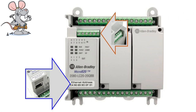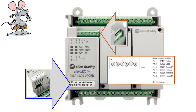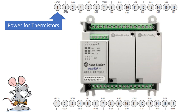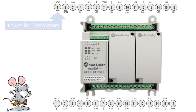It has an RS-232/485 port with six terminals — three terminals for RS-232 (pins 4, 5, and 6) and three for RS-485 (pins 1, 2, and 3). These are the screw terminals starting at the top. The input terminal strip is at the top: terminal 1 is plus DC 10 volts, which is an output power supply for thermistors. You have 12 inputs, and inputs 0, 1, 2, and 3 are shared between digital and analog.